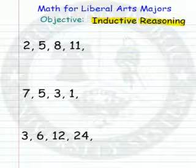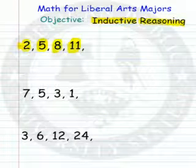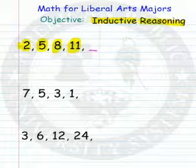Here we're looking at a sequence of numbers: first term, second term, third term, fourth term. My question is, what would be the fifth term?